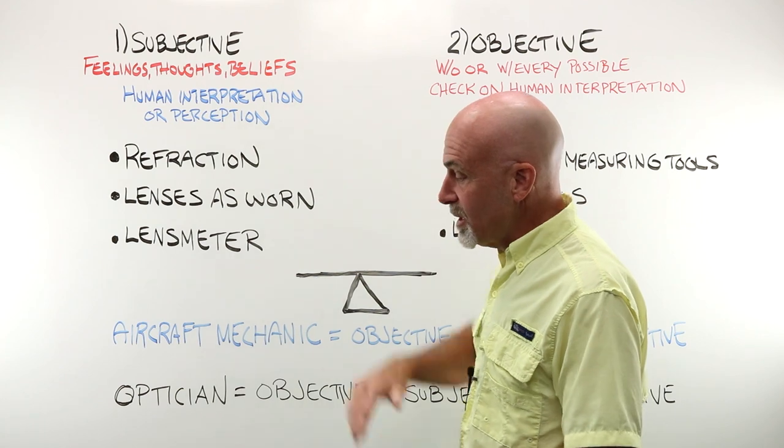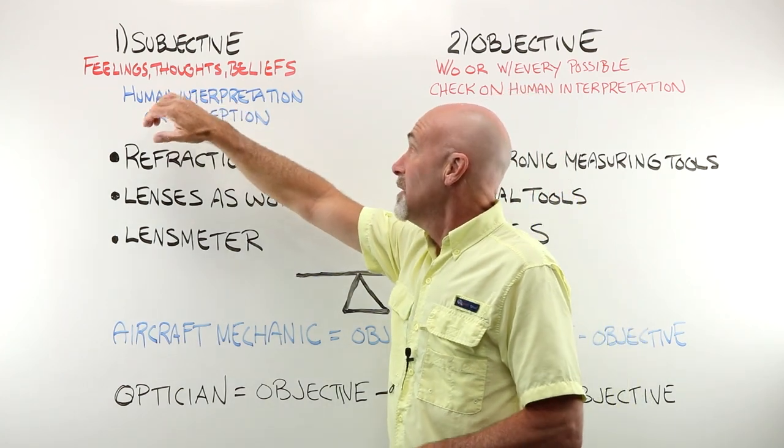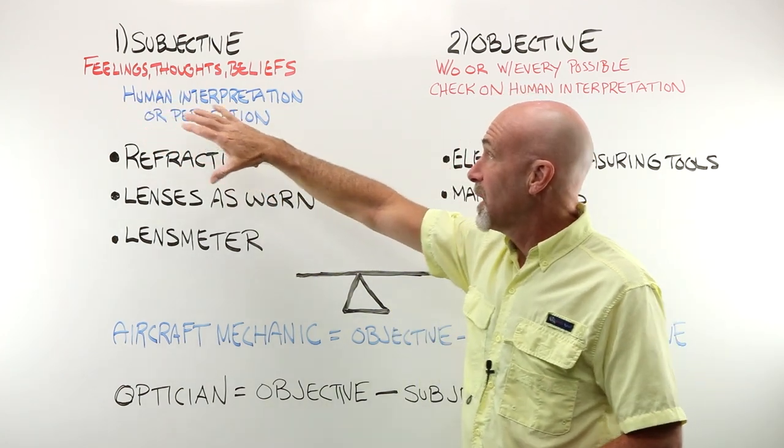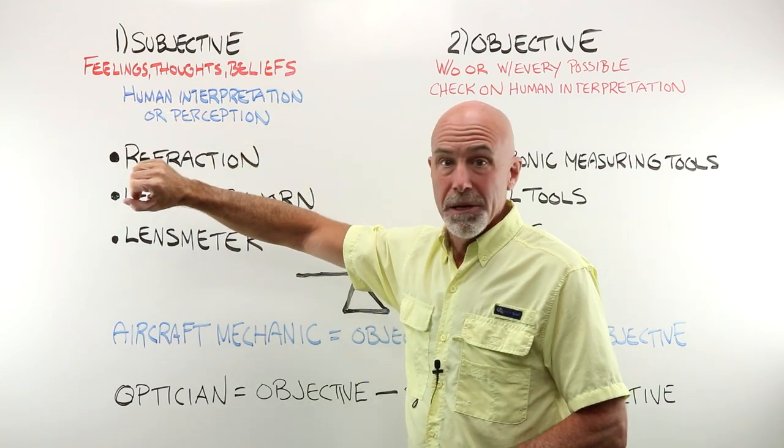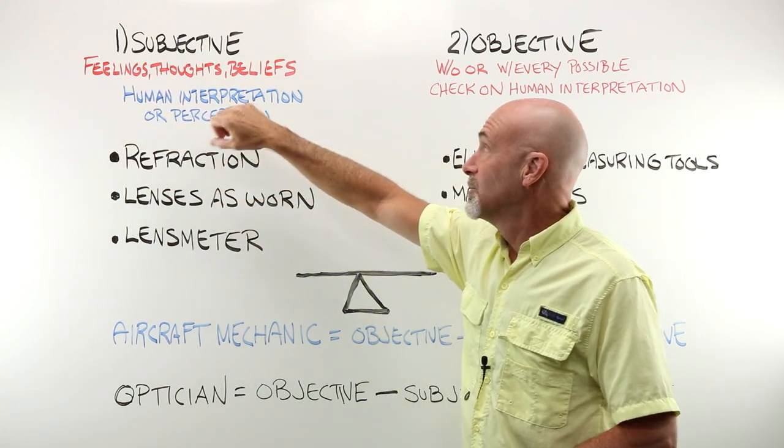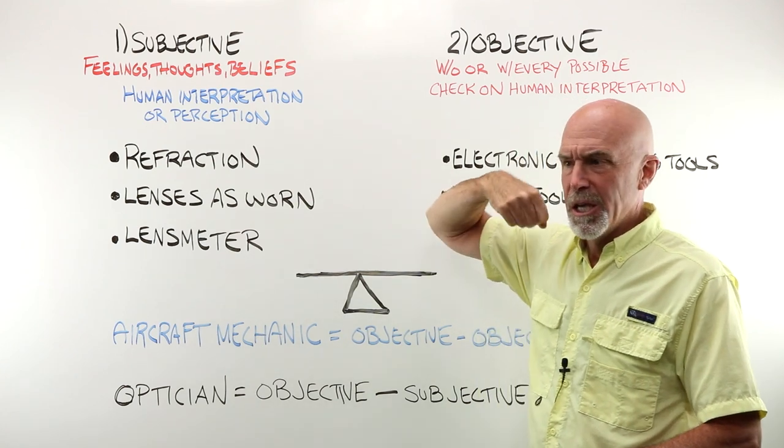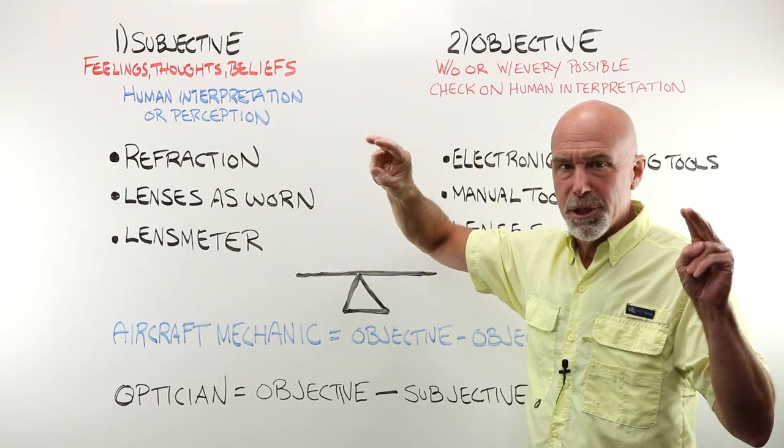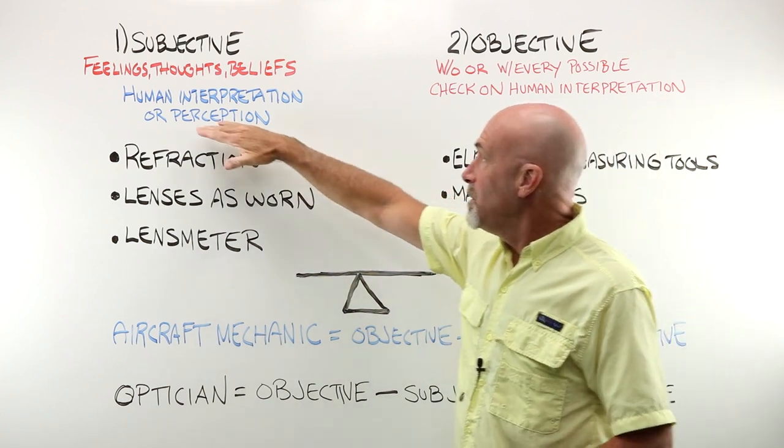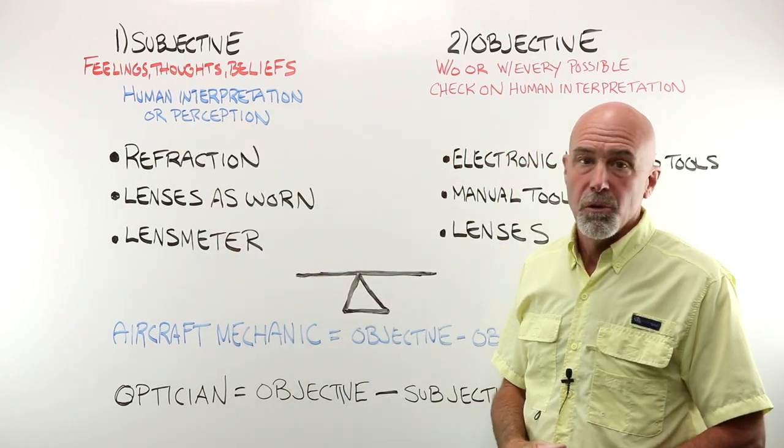One of them is subjective. Subjective means that something is open to the interpretation of a human. Feelings, thoughts, beliefs, things like religion, politics, eyeglass prescriptions. Open to human interpretation or perception.